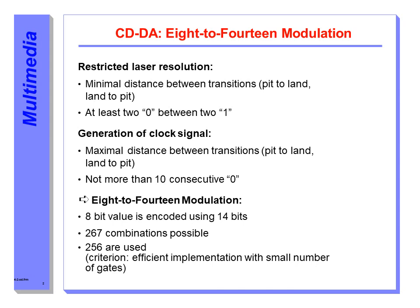The restricted laser resolution sets the minimum distance between transitions — pit to land and land to pit — with at least two zeros between two ones. This means each change from pit to land or land to pit corresponds to a channel bit one. If no change takes place, the channel bit is zero. On the other hand, pits and lands cannot be too long, otherwise a pace current synchronization signal block cannot be derived. The maximum length of pits and lands was thus limited.